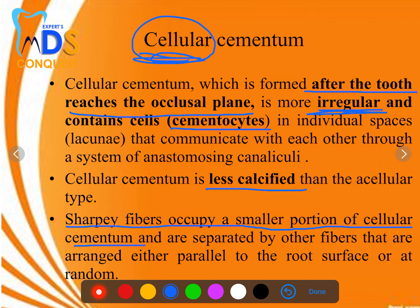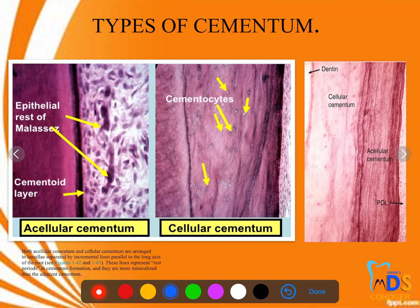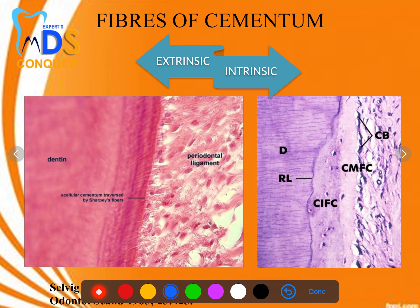In histological images, acellular cementum shows no cementocytes — you can see a cementoid layer and epithelial rests of Malassez. Cellular cementum, in contrast, shows distinct cementocytes. If an image-based question asks you to locate cementocytes, that structure is cellular cementum.